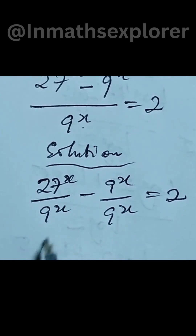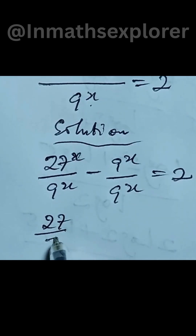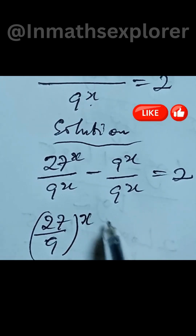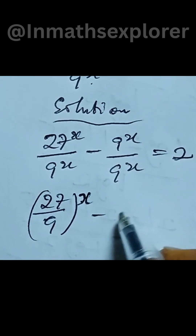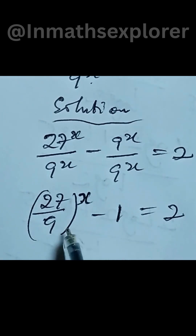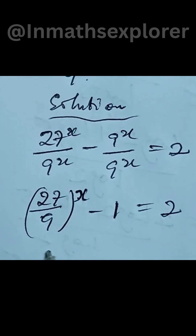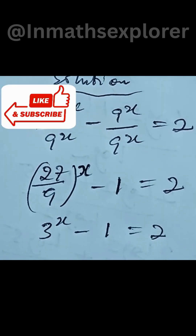So here I can write this as (27 over 9) to the power of x, minus 1, which is equal to 2. Now, 27 divided by 9 gives us 3, and I'll have it to the power of x. Then minus 1 equal to 2.